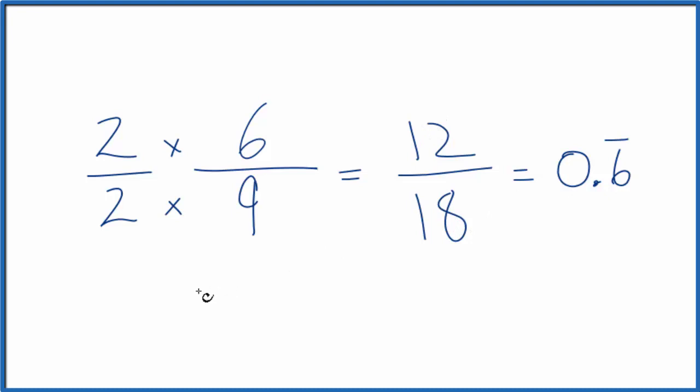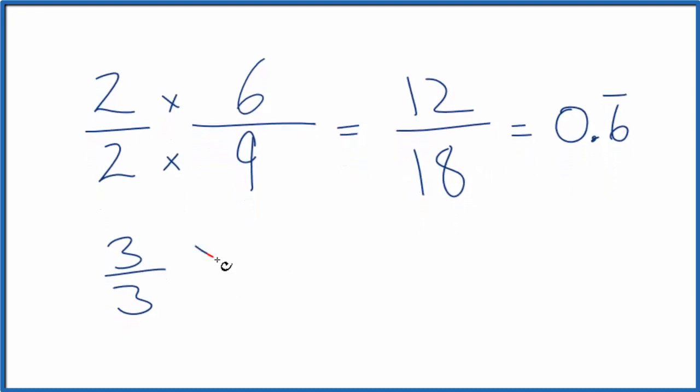Let's do another one. How about 3 over 3? Again, 3 divided by 3 is 1. We're not changing the value. 3 times 6 is 18, 3 times 9 is 27. And that is equal to 0.6. It's an equivalent fraction to 6 ninths.